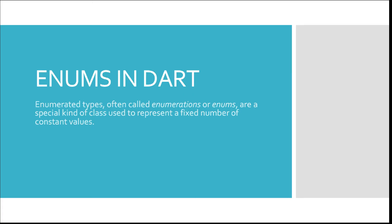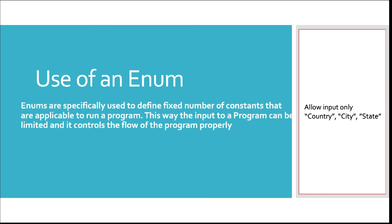So what are enums? These are nothing but enumerated types, often called enumerations. These are a special kind of class used to represent a fixed number of constant values. Constants are values that are not going to change throughout the lifetime of a program — say you have a variable x equal to 10 and that value never changes. When you have something like that, you make use of enums.